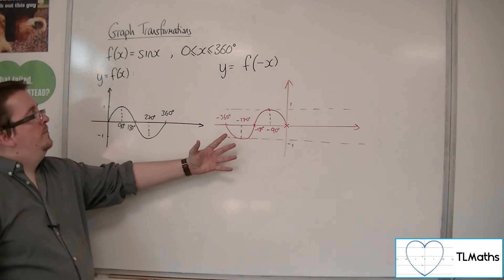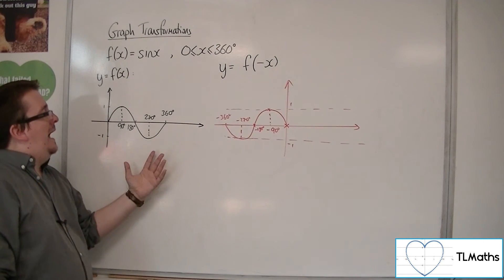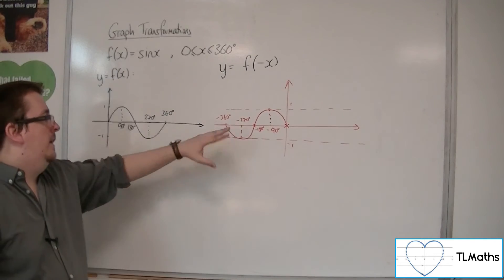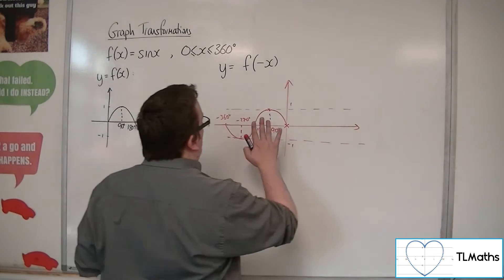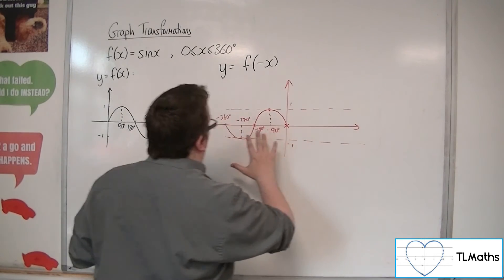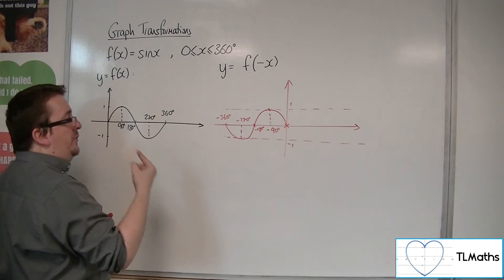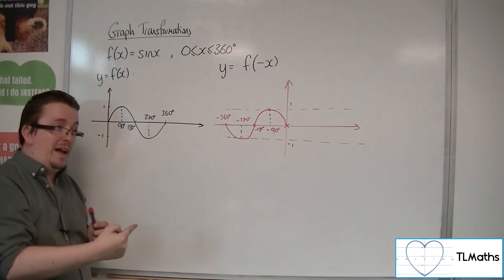So what's happened is that the curve has, instead of being reflected in the x-axis like last time, this is a reflection in the y-axis. All of the x-coordinates have changed sign. All the y-coordinates have stayed precisely the same value.